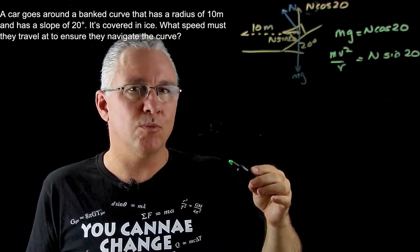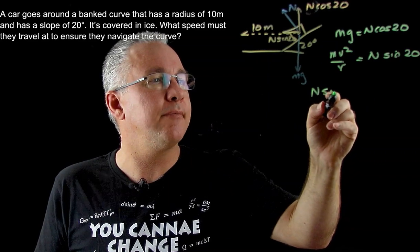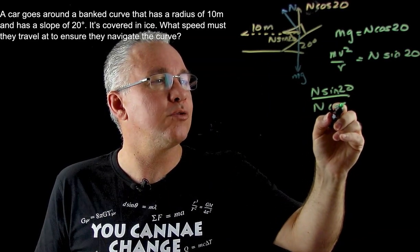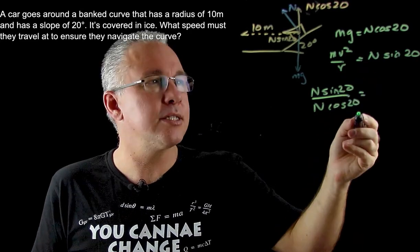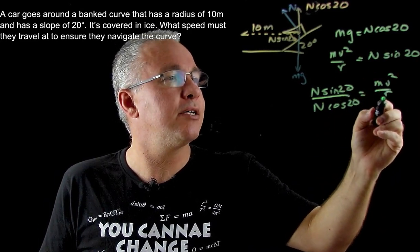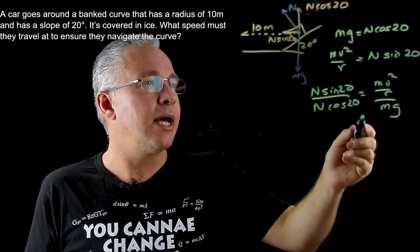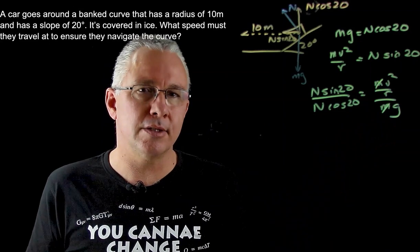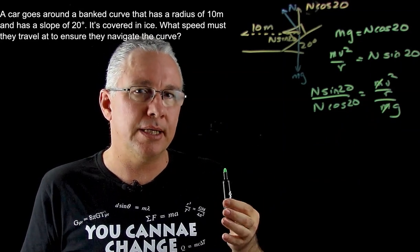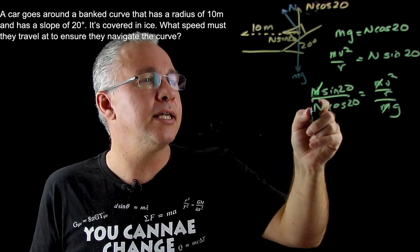Now what we do is we put one over the other. So I'm going to get n sine 20 and divide that by n cosine 20. And on the other side I'm going to get mv squared over r divided by mg. Can you see what happens? Our m's actually cancel out. So in other words the value we get for the velocity is going to be irrespective of the mass of the car. You'll also note that the n's cancel out. We don't need to know the actual value for the normal force.